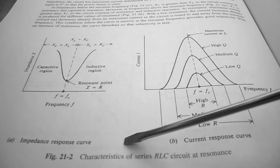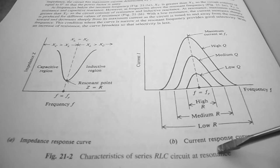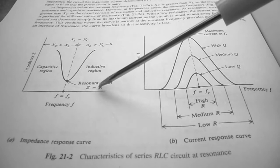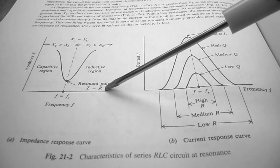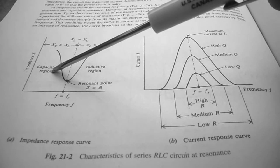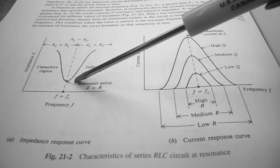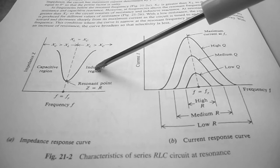In Figure 21-2, they give characteristics of a series RLC circuit at resonance. From the impedance versus frequency chart, when we hit resonant frequency, Z equals R, so we're only seeing the resistive part of the circuit. When the frequency is lower, capacitive reactance is higher; when the frequency is higher, inductive reactance is higher.